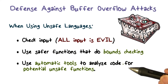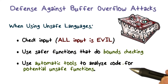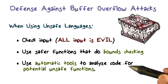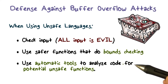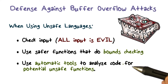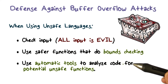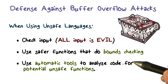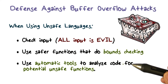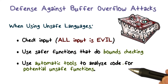One problem with automatic tools is that they may have a lot of false positives, or if they miss things, they have false negatives. You can't have tools with zero false positives or false negatives. But the tools can certainly help us get rid of many possible vulnerabilities, producing code that is a lot more secure.